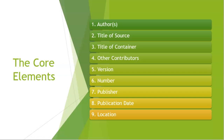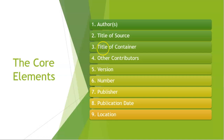MLA has tried to streamline the citation process by creating nine core elements. First is the author, the person who created the source. Second is the title of the source itself. Third is the title of the container — that's where that source is housed. For example, a song title is the title of the source, and the song lives in an album, so the album is the container.